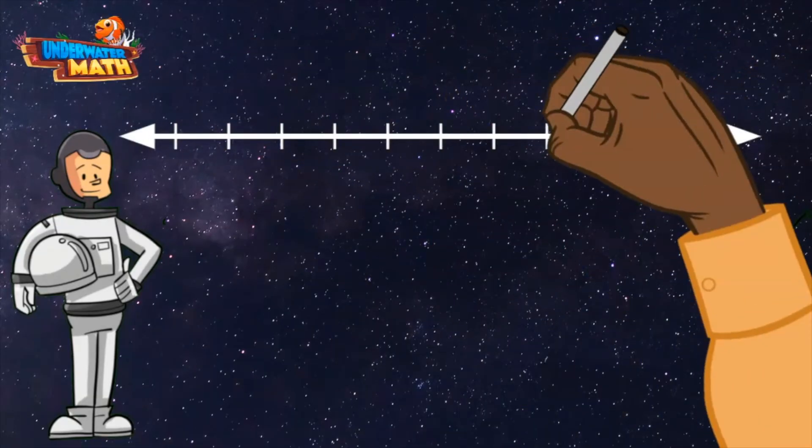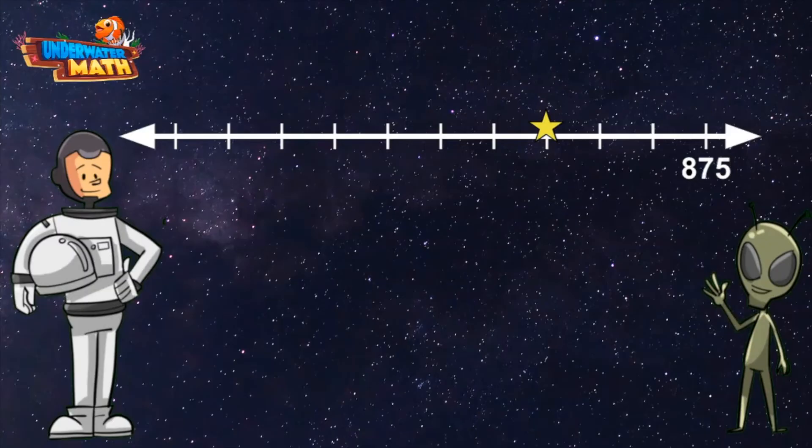Wait a minute Lenny, this number line only shows one number. Oh man, okay, we've got this. Since the number is at the end of the number line, I know I need to count backward until we reach the star.